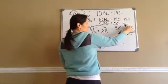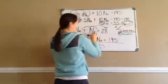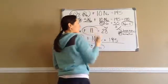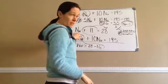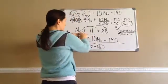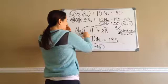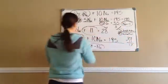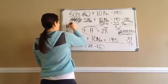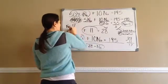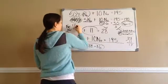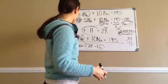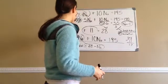Now I'm going to take my ND answer and put it back in. If ND is 11, then what is NN? Blank plus 11 equals 28, so 28 minus 11 — we know that it's 17. So NN equals 17, and ND equals 11. How many nickels are they using? 17. How many dimes? 11.